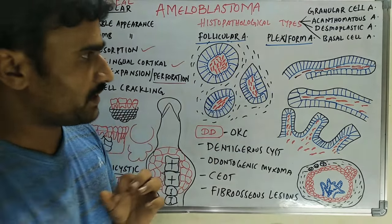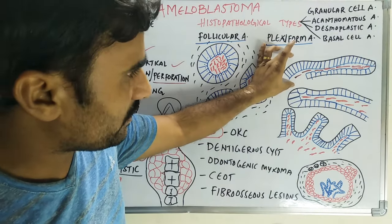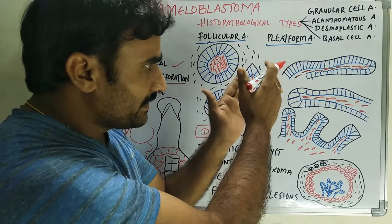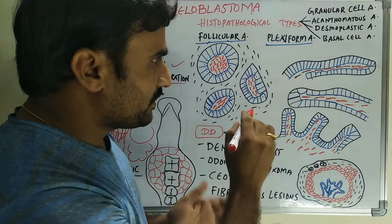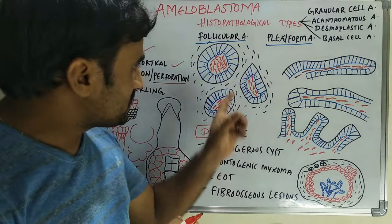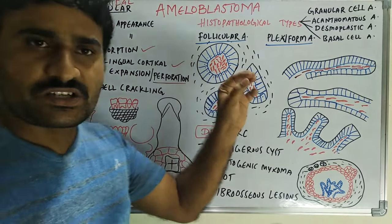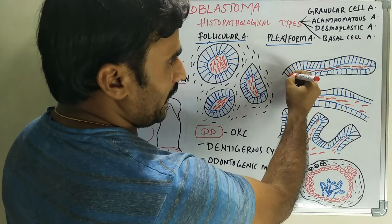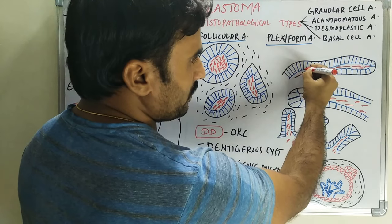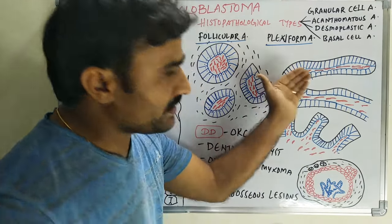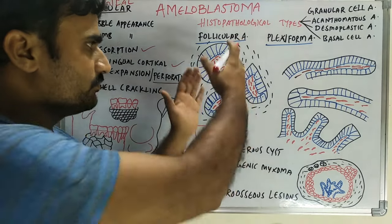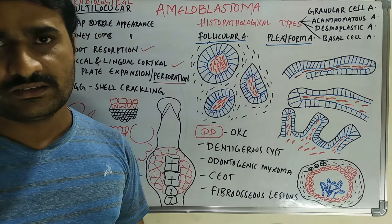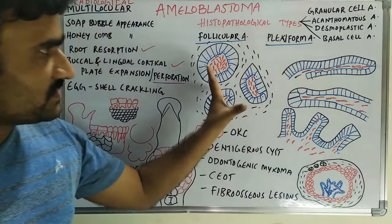In plexiform amyloblastoma there are sheets or cords of epithelium rather than islands. The inner lining structure is similar, but the stellate reticulum or spindle-shaped cells are less prominent compared to follicular amyloblastoma. The tall columnar cells with nucleus polarized away from the basement membrane are still present.